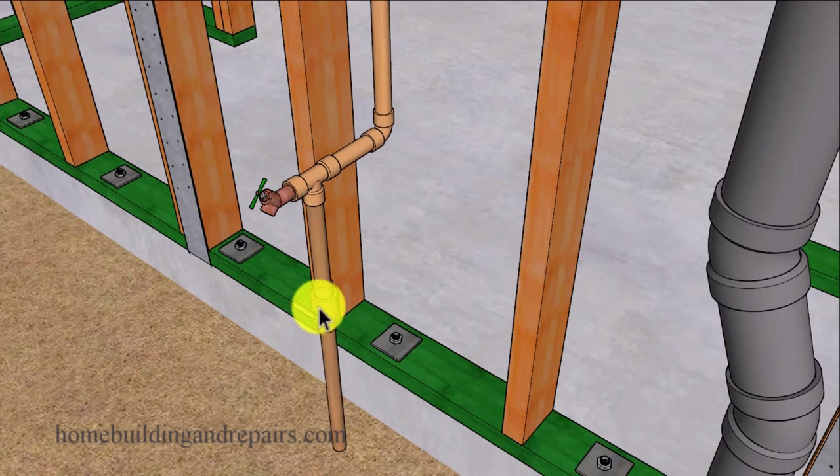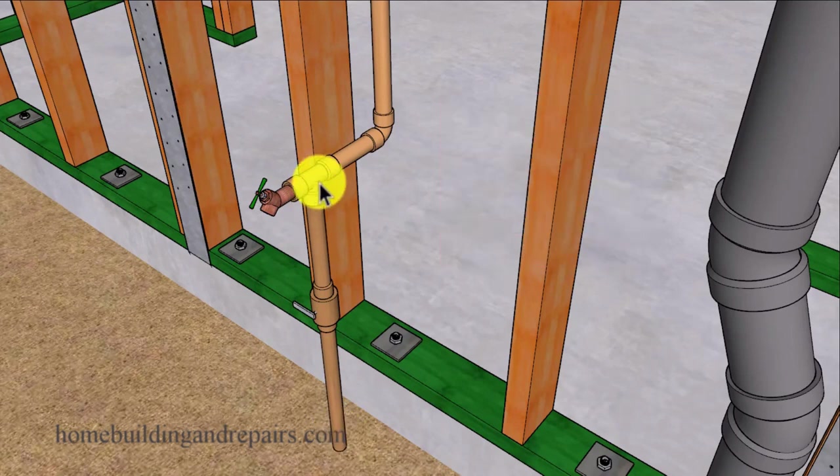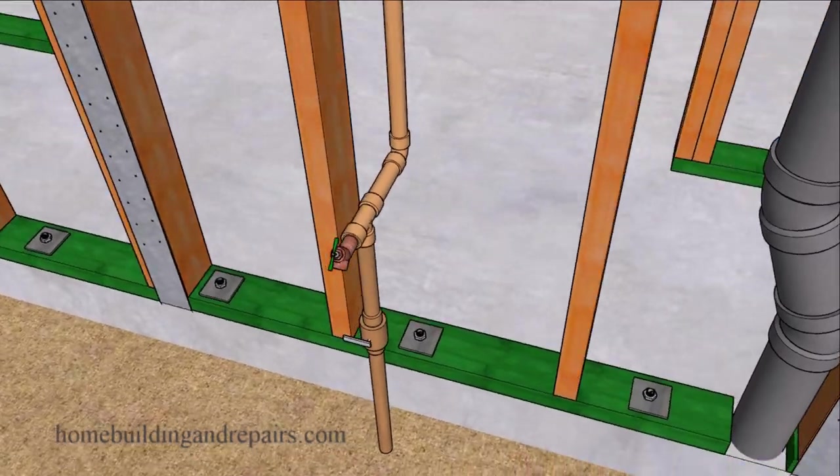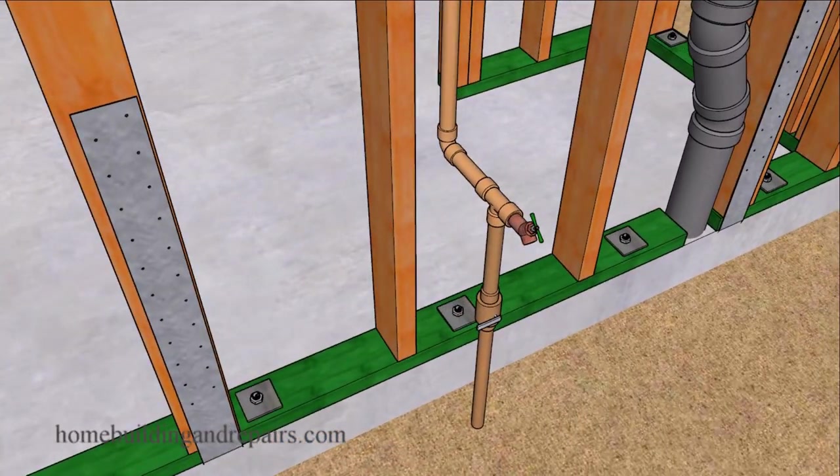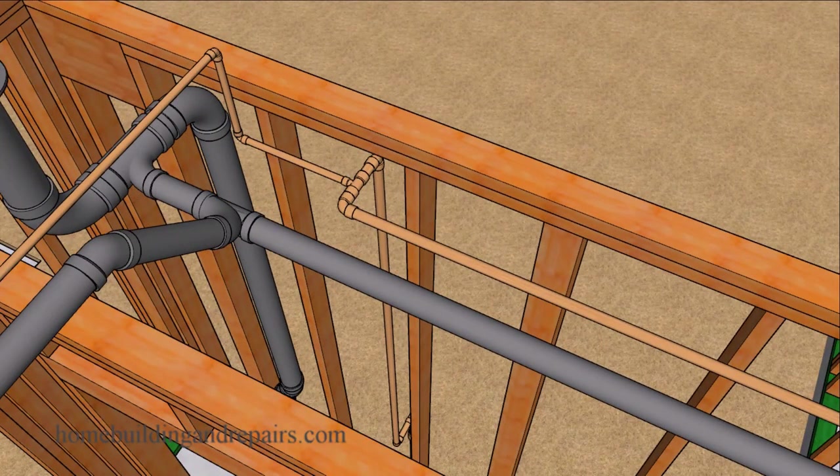Starting with the gate valve, the main shutoff valve coming into the house, this would be the cold water supply to your municipal services. Then we're going to come in here and feed the rest of the house along with a hose bib just in case you want to water the outside yard or clean your car. And we will not be cutting the framing plates.